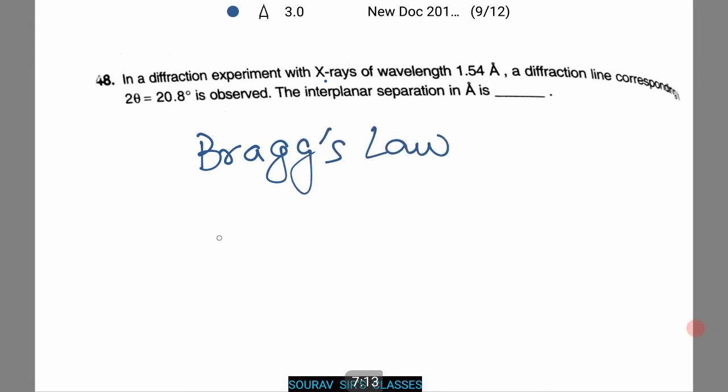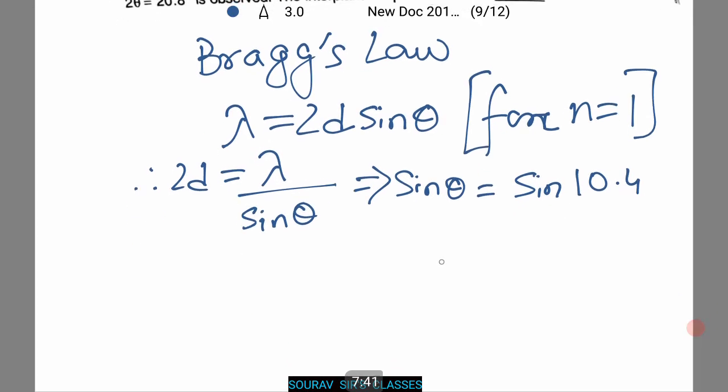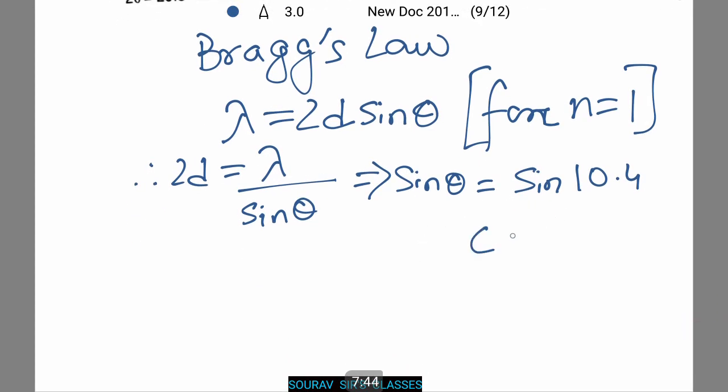Now we will be using Bragg's law. And according to that, lambda equals 2d sin theta for n equals 1. Therefore 2d equals lambda, or sin theta equals sin 10.4. This is because 2 theta equals 20.8. Thus theta equals 10.4. Now simplify it further.